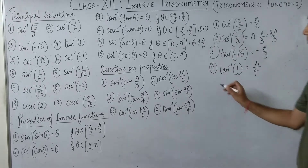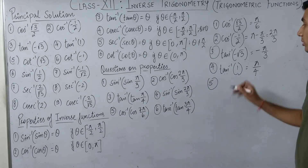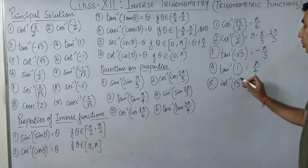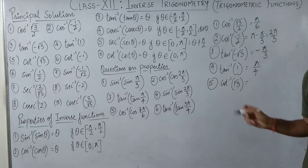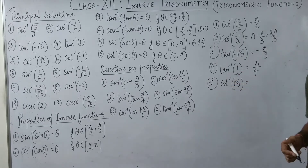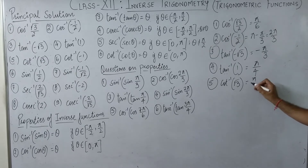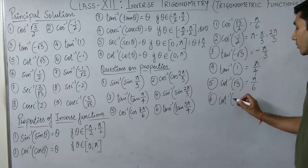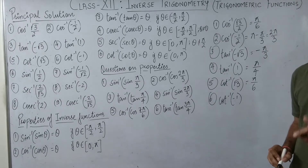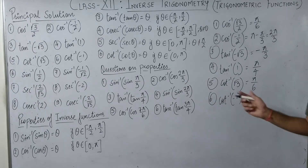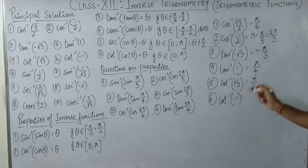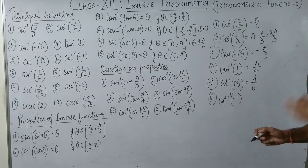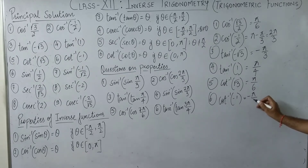Question five: cot⁻¹(√3). If you don't remember cot values directly, flip it to tan⁻¹(1/√3). tan(30°) = 1/√3, so 30° = π/6. It's positive, so the answer is π/6. Question six: cot⁻¹(-1). Flip to tan⁻¹(-1). tan(45°) = 1, so tan⁻¹(-1) gives minus π/4. Note: the π-minus trick is only for cos and sec — not cot, tan, or sin.